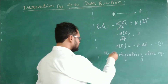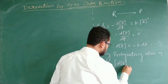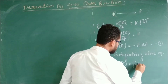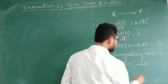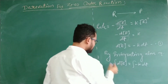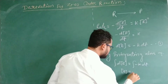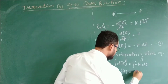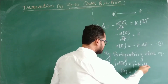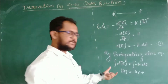Integrating the above equation: the integration of dR equals the integration of minus k dt. So integration gives R equal to minus kt plus the integration constant C. This is equation number 2.